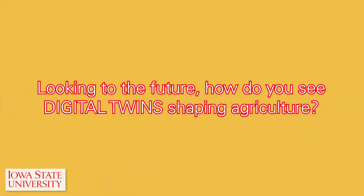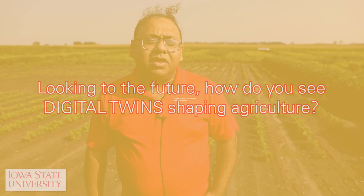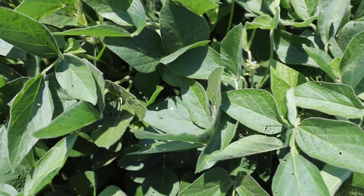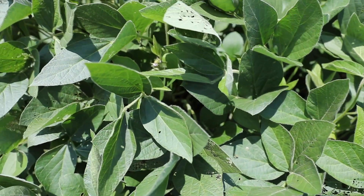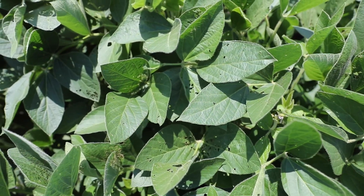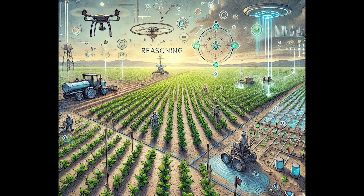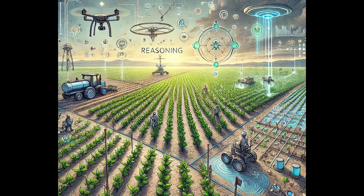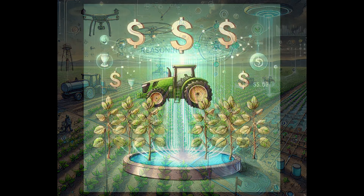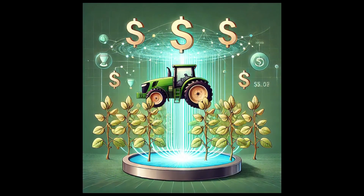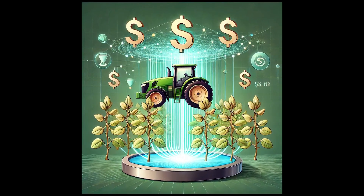Digital twins are going to be a really important tool for future agriculture. They're going to revolutionize this area we call cyber agricultural systems. This helps us virtually integrate these models to figure out what's going to happen, run what-if scenarios, and that's going to change how we do breeding and how we do production. It's going to make agriculture more sustainable, more efficient, and more profitable, because this is allowing us to run virtual experiments and virtual what-if scenario analysis for agriculture.